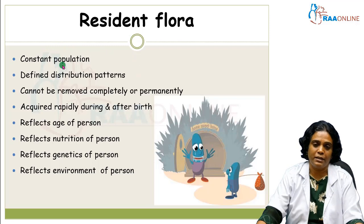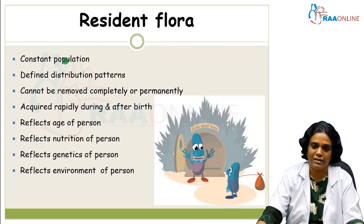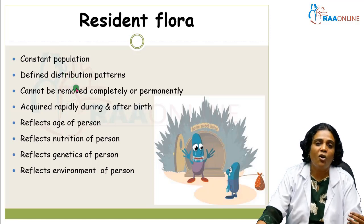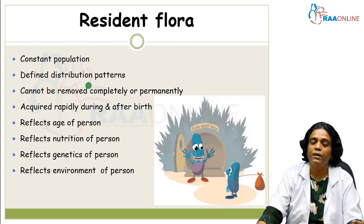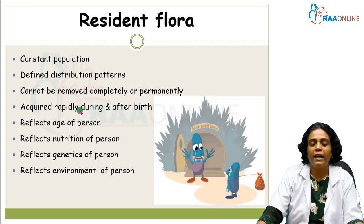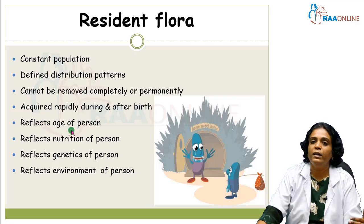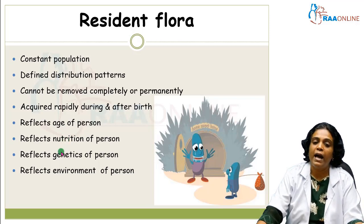The resident flora will be constant at a particular site — for example, E. coli will be constant in the gastrointestinal tract. They cannot be removed completely or permanently. If they are removed, say when a person is taking antibiotics, the intestinal flora may be temporarily washed away, but it gets reestablished. This is also true for oral flora. Resident flora are acquired rapidly during or after birth and reflect the age, nutrition, genetics, and environment of the person.